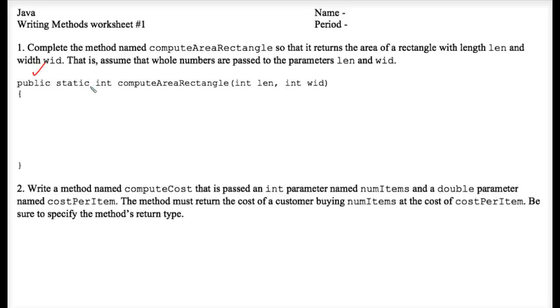The method is public. This doesn't really affect the problem here whether it's static or not. The name is computeAreaRectangle, and we're told that it has two integer parameters, len and wid, and notice that they're both ints.